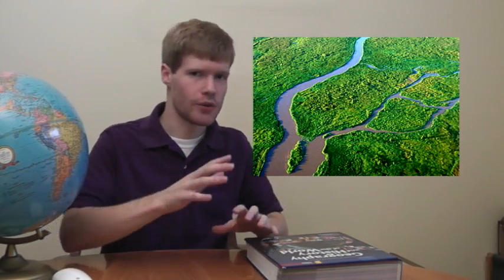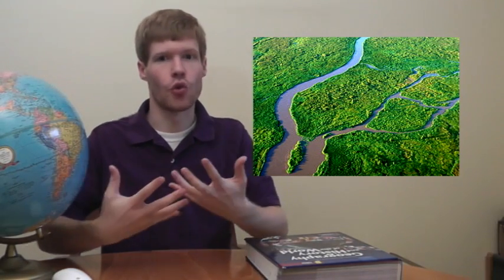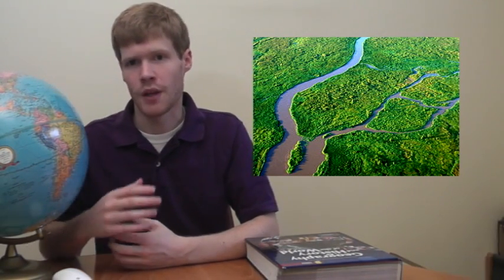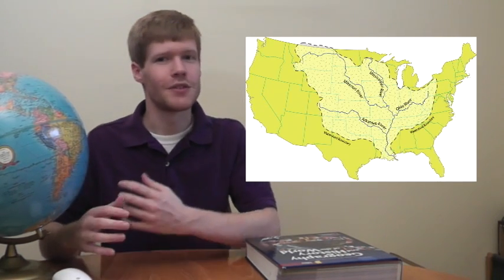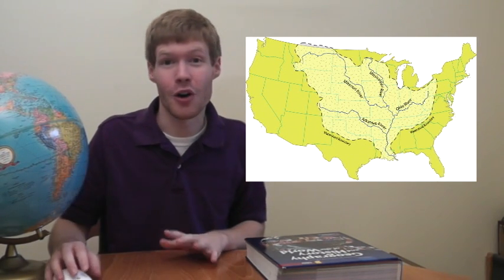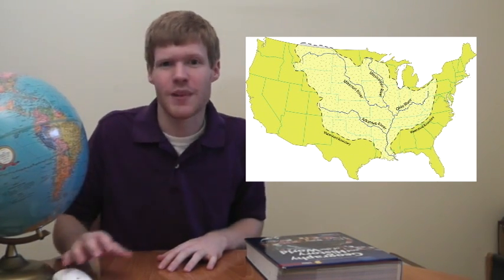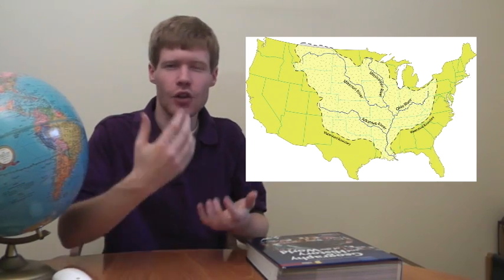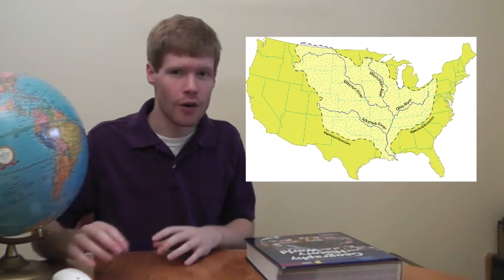We also talk about tributaries, which are smaller rivers that join with a bigger river. Now, the most famous example of a river in the United States is probably the Mississippi. The Mississippi River system is one of the most important commercial waterways in the entire world. It's like a highway where tons of goods are moved throughout American history.